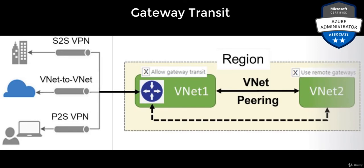So in these scenarios, gateway transit will allow peer virtual networks to share the gateway and get access to the resources. All the traffic would then flow through the virtual network gateway, and that means you do not have to deploy a virtual private network gateway in the peer virtual network. You only need to deploy it once, and it can then be used to have communications forwarded to other networks.